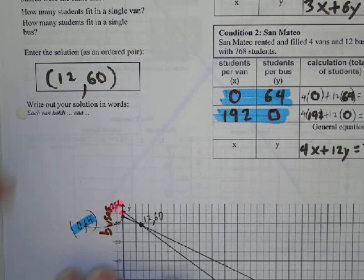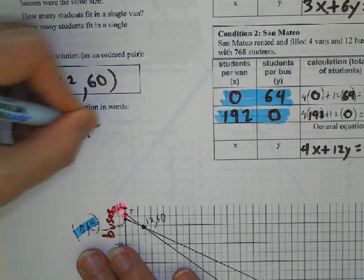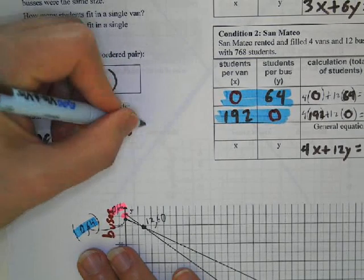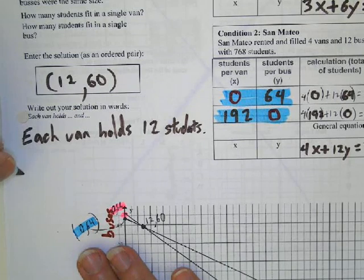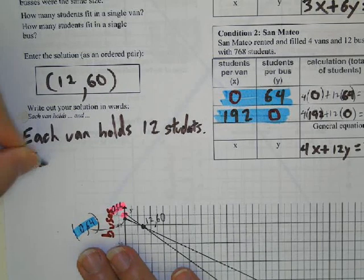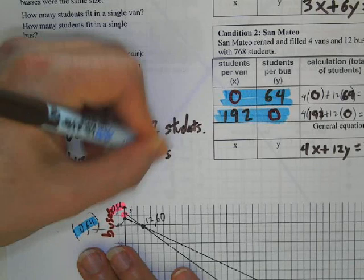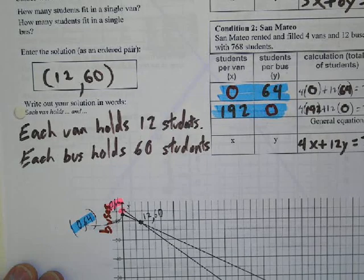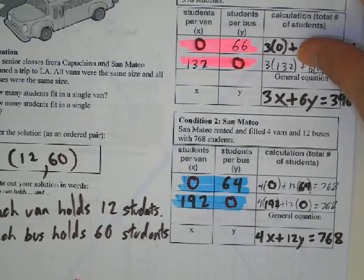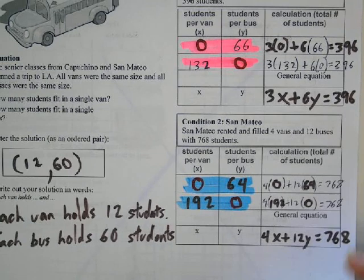The most important thing, which most of you haven't done and I kept bugging you, you need to write your solution out in words. So what does 12 comma 60 mean? This means each van holds 12 students, and each bus holds 60 students. That's what this intersection means. This is what you should have gotten from doing the Desmos activity.